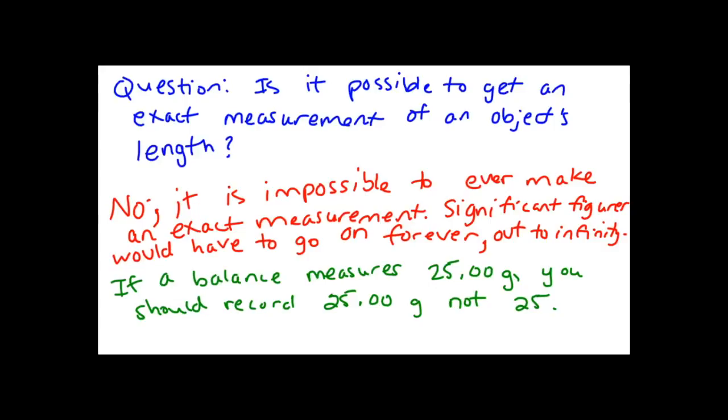The answer to that is no. It's impossible to ever make an exact measurement in science. Significant figures would have to go on forever out to infinity. This applies not just to length, but anything that you measure in the real world. You're always going to be limited by your instrument. The way that scientists have dealt with that limitation is to use significant figures in our measurements.